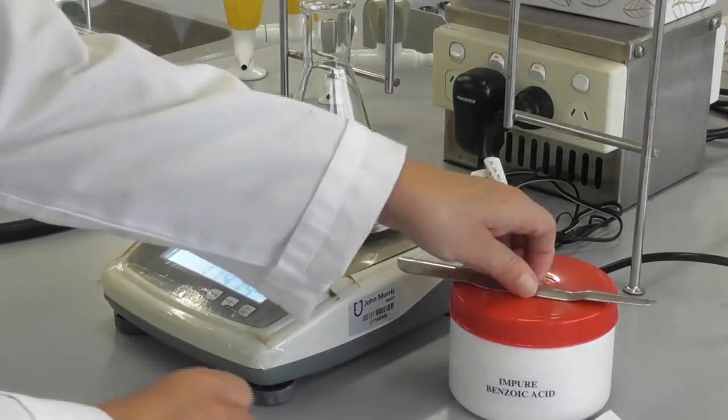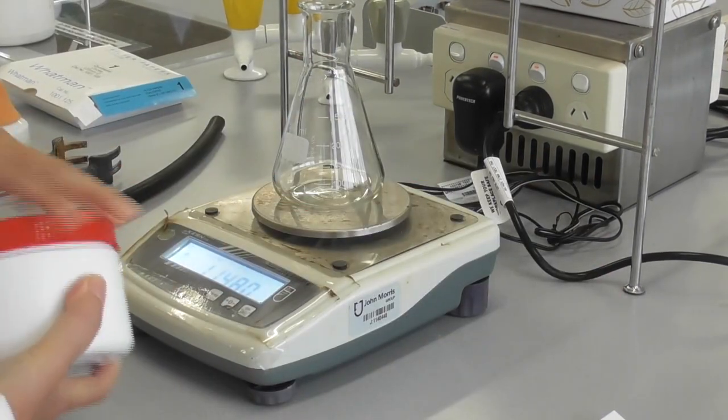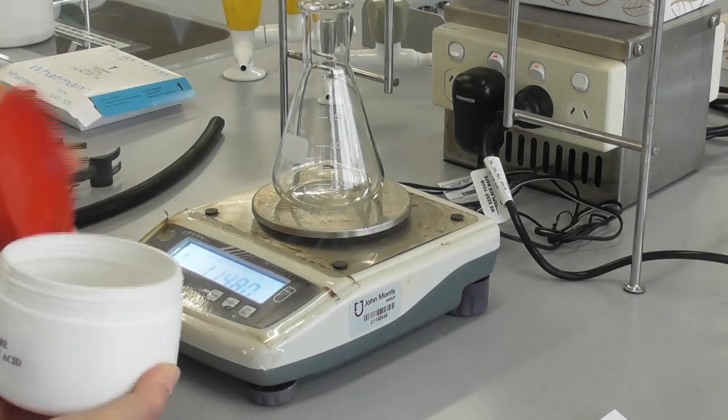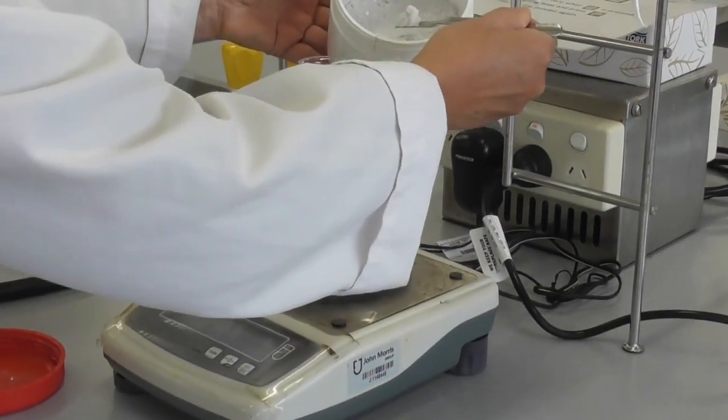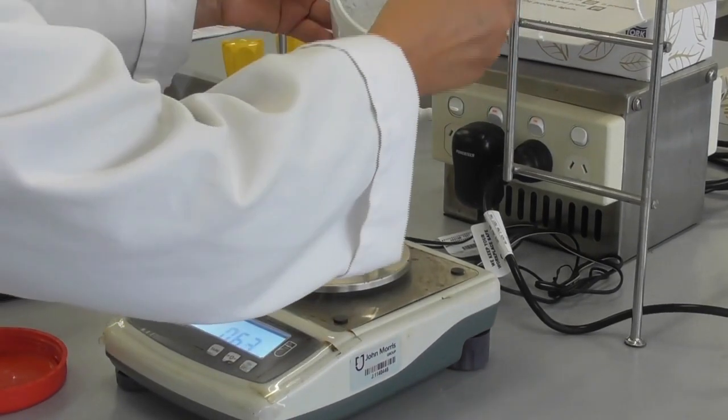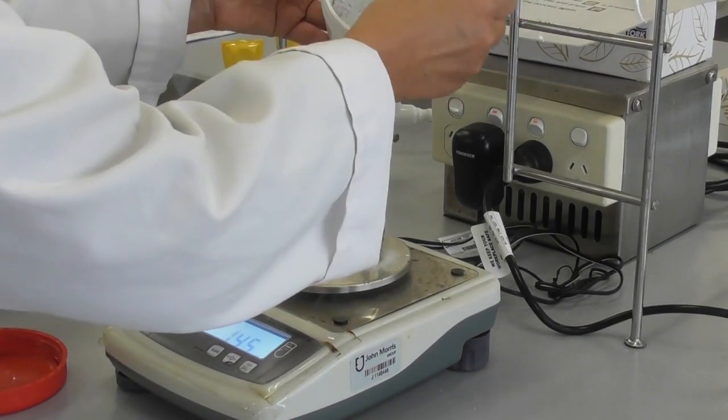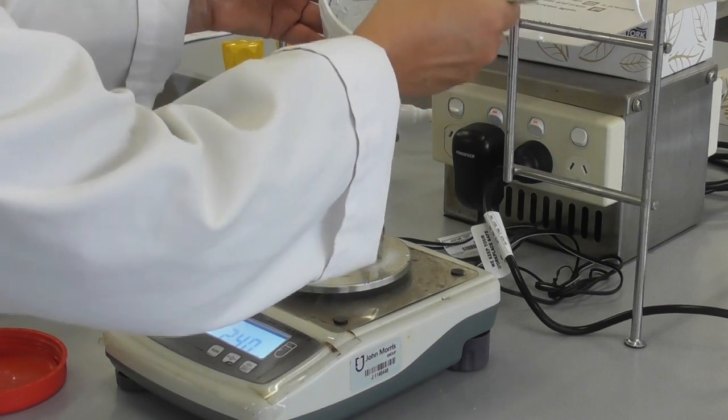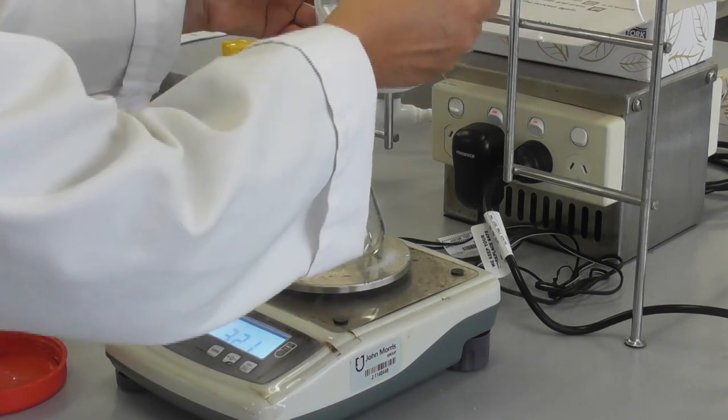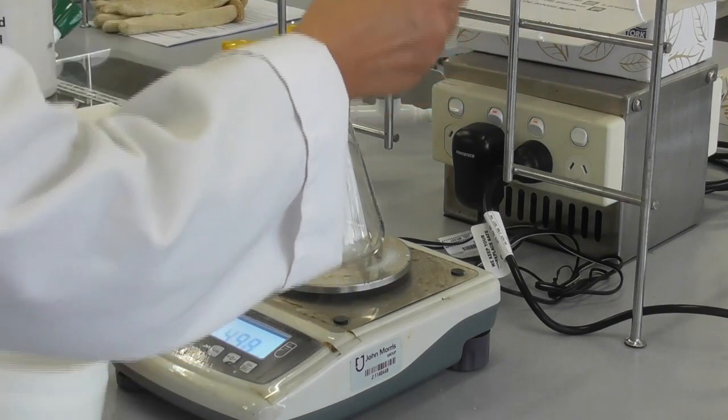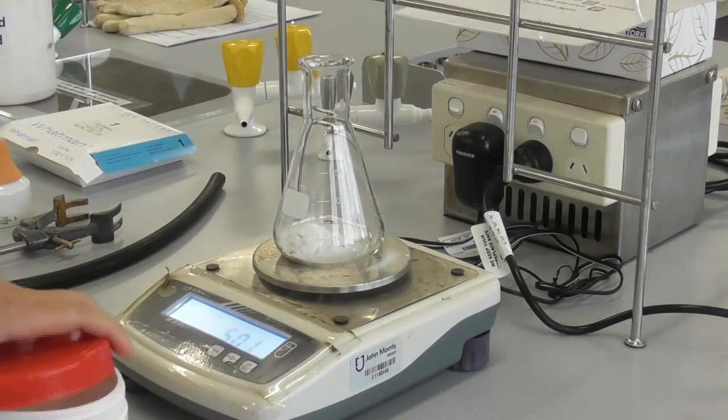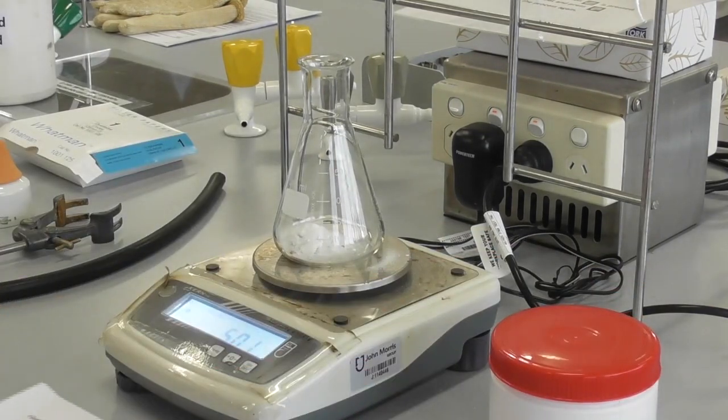We put a 250 ml conical flask onto a top loading balance and weigh out about 5 g of impure benzoic acid. It doesn't need to be 5.0 g but we do want to write down the mass used for the experiment.